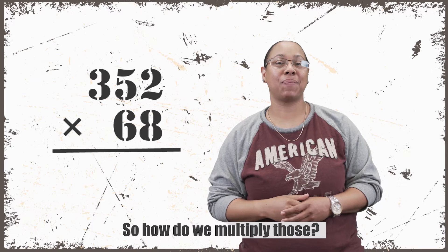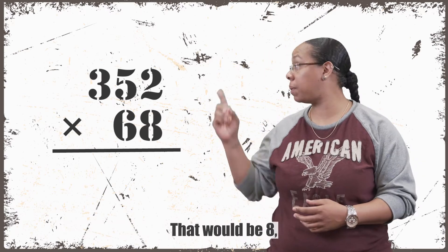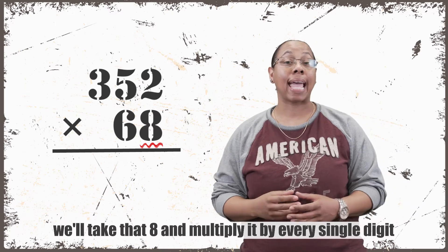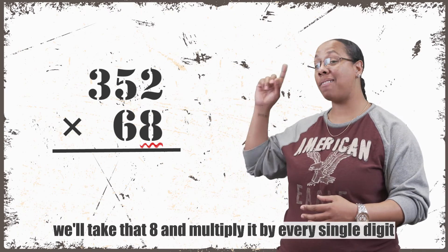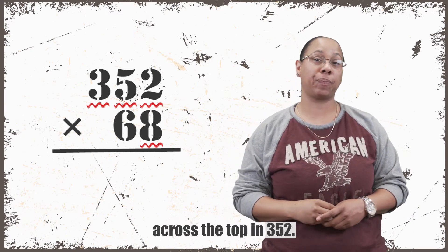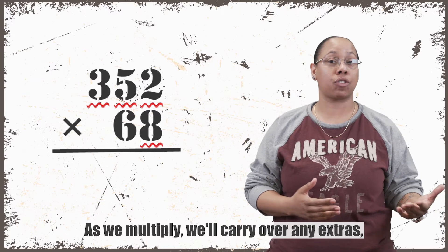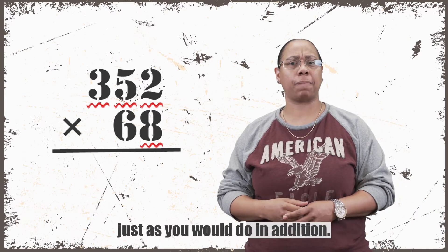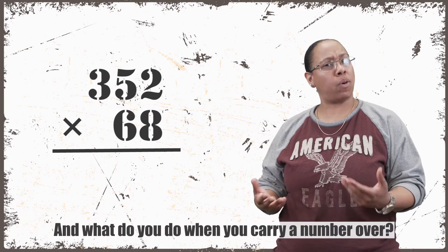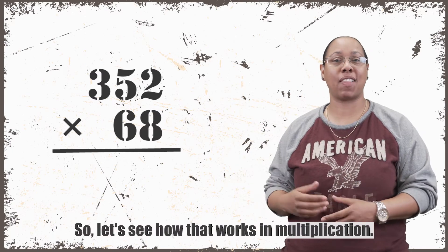So how do we multiply those? We start with the units digit in the bottom number. That would be the 8. We'll take that 8 and multiply it by every single digit across the top in 352. As we multiply, we'll carry over any extras, just as you would do in addition. And what do you do when you carry a number over? You add it. So let's see how that works in multiplication.